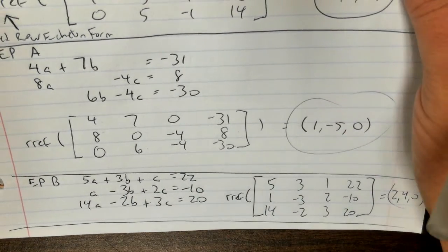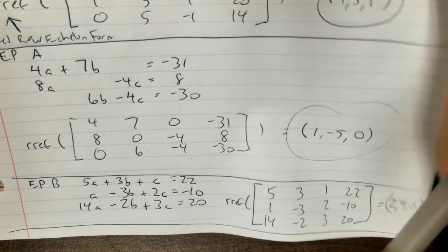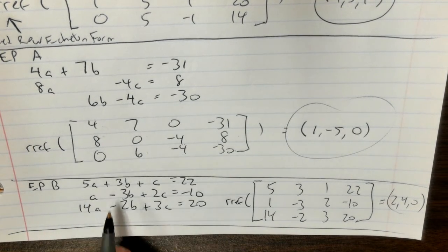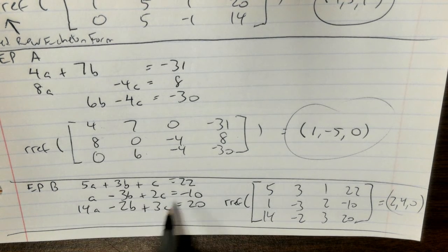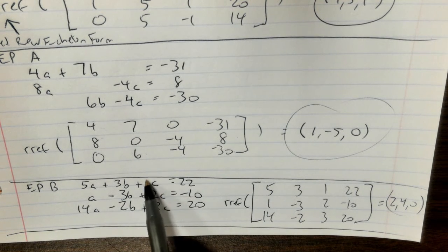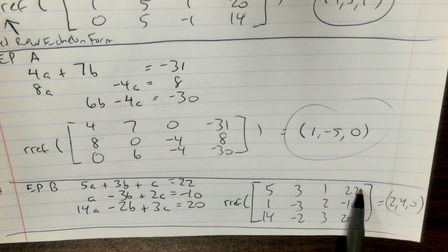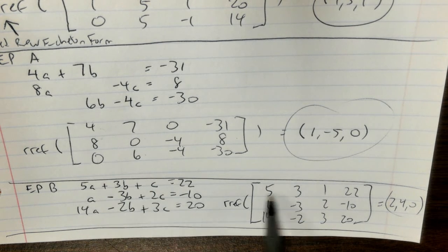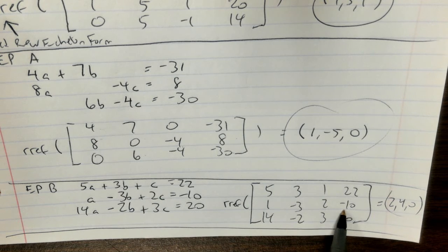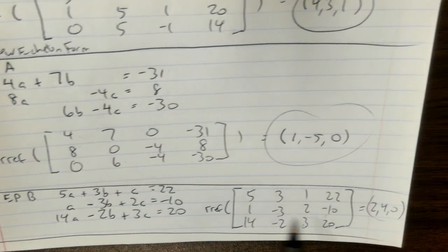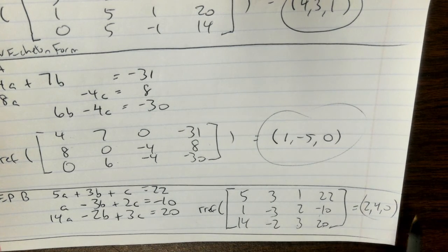For extra practice B, you take 5, 3, 1 with 22; then 1, −3, 2 with −10; then 14, −2, 3 with 20. When you do rref on that you get 2, 4, 0 as your ordered triple.